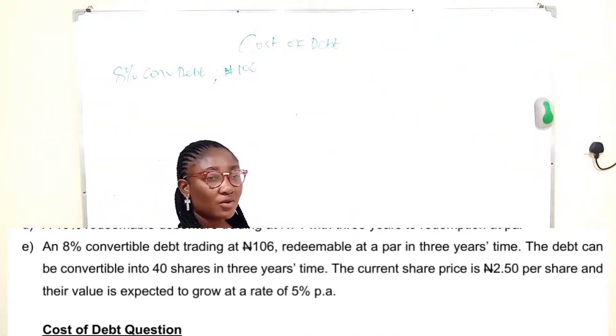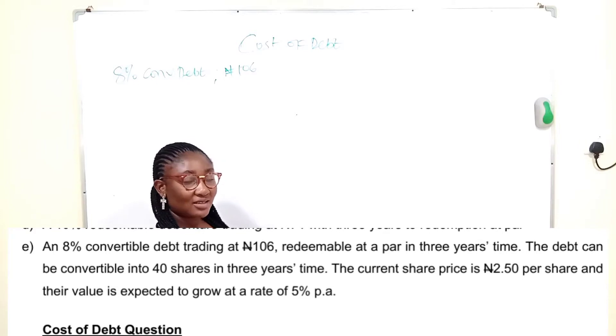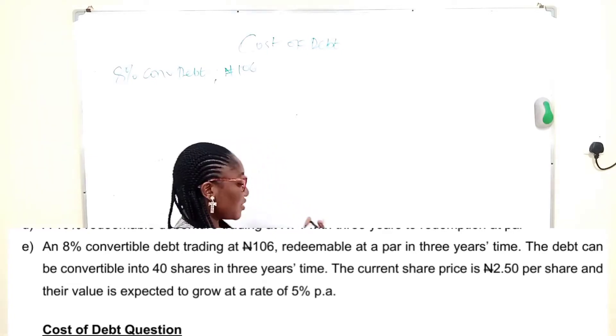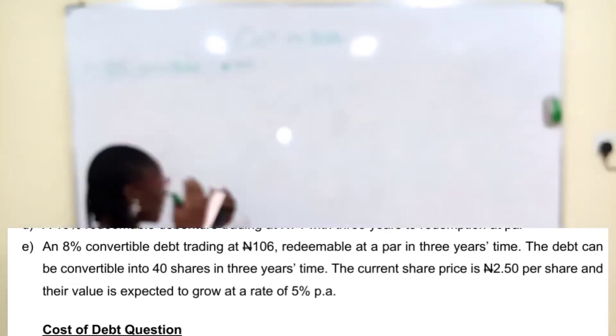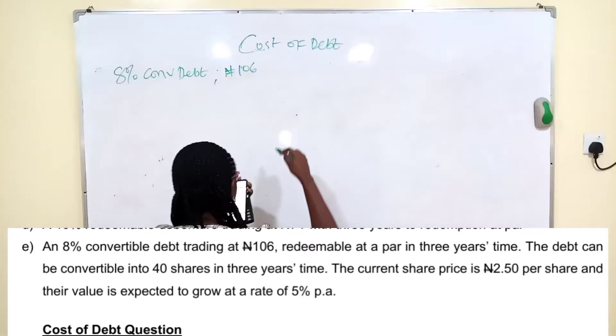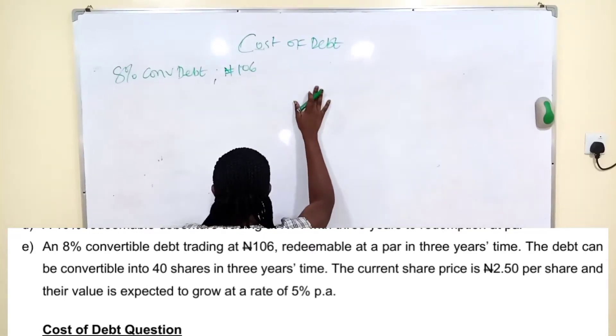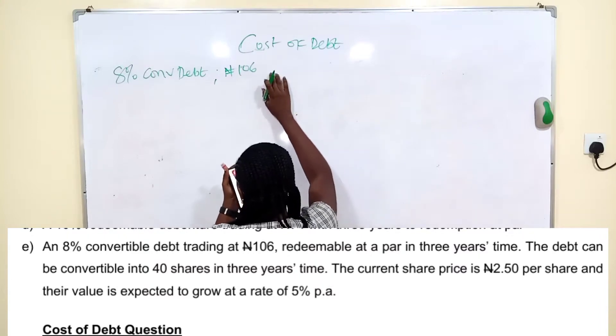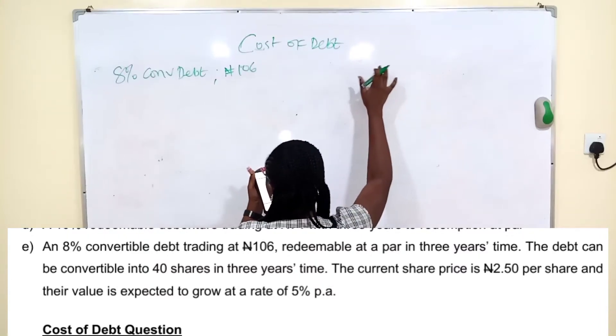is dropping 106 Naira for a debt written at 100 Naira, that the face value is 100 Naira. So definitely, the cost of debt will be less than the coupon. That is, the debt holder's required rate of return. Definitely, you can kind of predict your answers. So, 8% convertible debt trading at 106 Naira, redeemable at par in 3 years time.